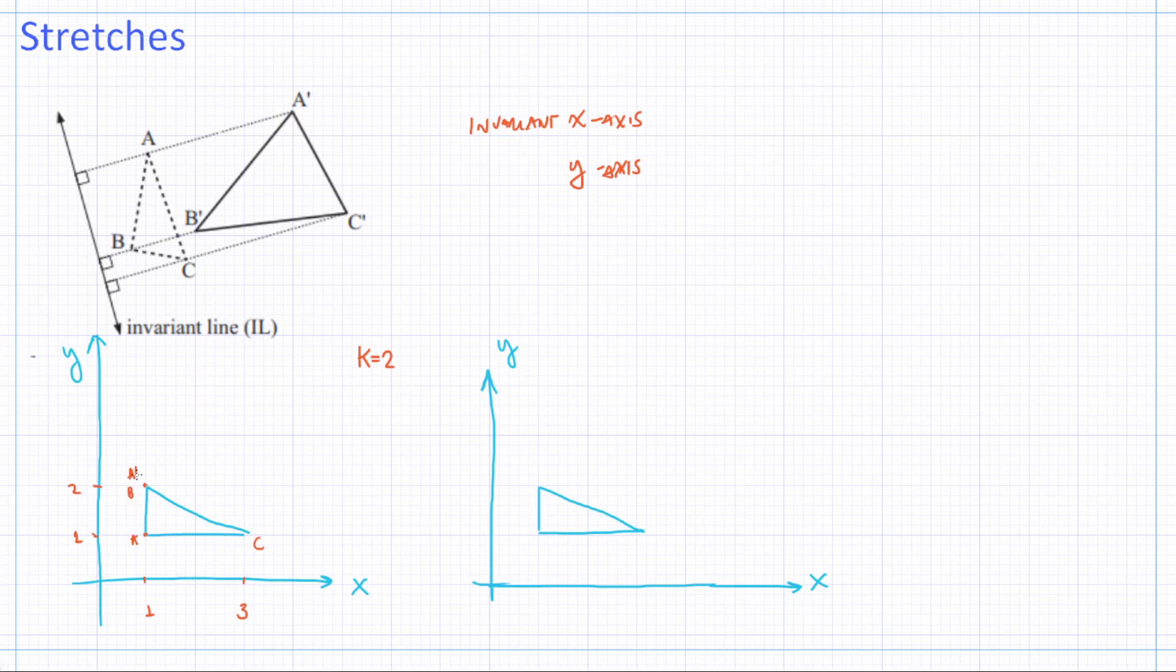This is my A' now. Where would B' be? Well, B was 2, so now it's going to rest at 4. Again, this is invariant x-axis. You can see that the x-coordinates, they won't change. This is my B'. What about C'? Well, the height of C' was 1, so scale factor is 2. C' is going to be at height 2. If I connect all those points, that would be our triangle with invariant x-axis and scale factor 2.